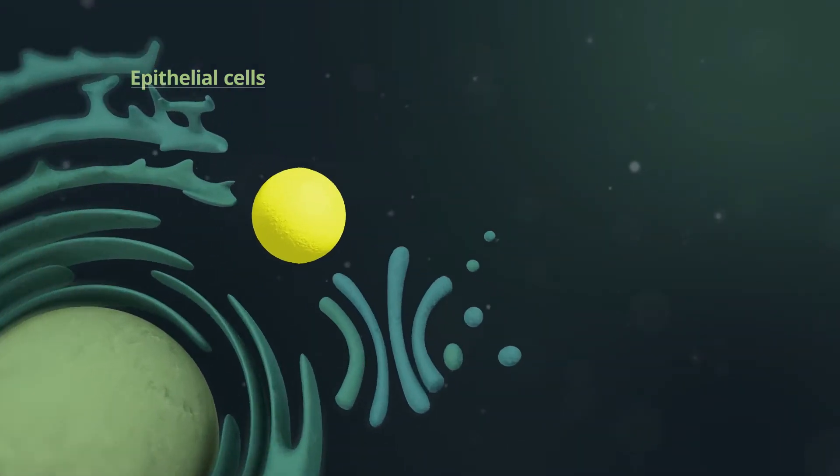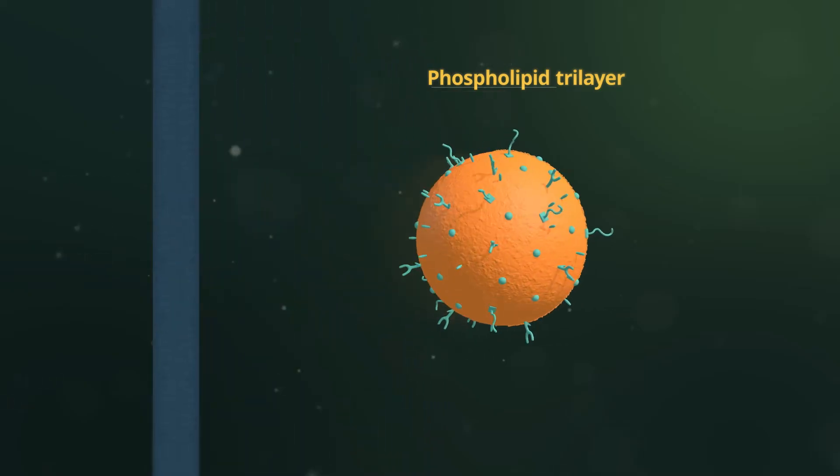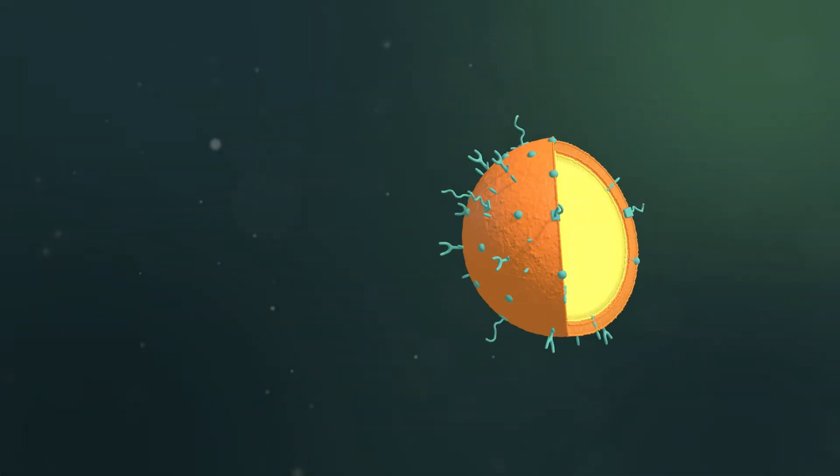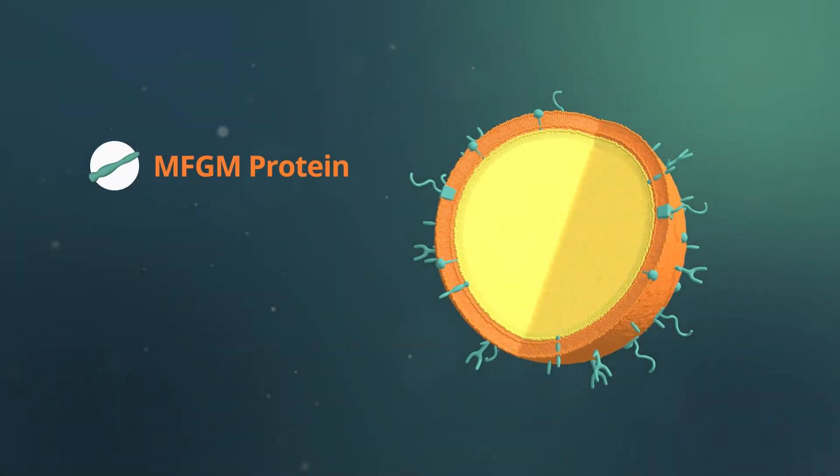These droplets are covered by phospholipids as they are released from the epithelial cell. The globule surface is covered with a complex mixture of functional MFGM protein, lipid, and phospholipid.